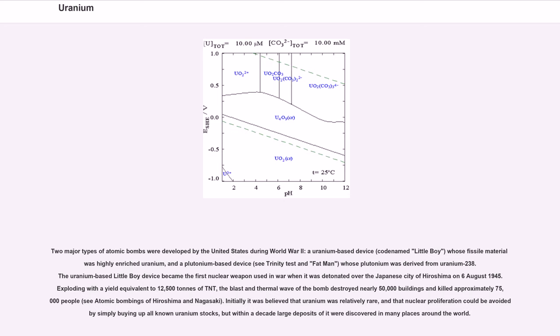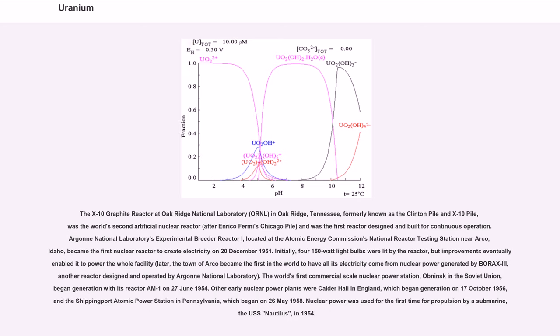Initially it was believed that uranium was relatively rare, and that nuclear proliferation could be avoided by simply buying up all known uranium stocks, but within a decade large deposits of it were discovered in many places around the world. The X-10 Graphite Reactor at Oak Ridge National Laboratory (ORNL) in Oak Ridge, Tennessee, formerly known as the Clinton Pile and X-10 Pile, was the world's second artificial nuclear reactor, after Enrico Fermi's Chicago Pile, and was the first reactor designed and built for continuous operation. Argonne National Laboratory's Experimental Breeder Reactor I, located at the Atomic Energy Commission's National Reactor Testing Station near Arco, Idaho, became the first nuclear reactor to create electricity on December 20, 1951. Initially, four 150-watt light bulbs were lit by the reactor, but improvements eventually enabled it to power the whole facility. Later, the town of Arco became the first in the world to have all its electricity come from nuclear power generated by BORAX-III, another reactor designed and operated by Argonne National Laboratory.